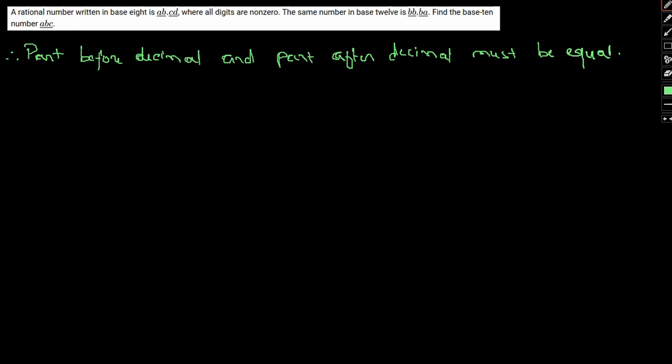So if we take the before decimal part, here ab in base 8, here we have bb in base 12. So this was in base 8, this is 12. So if we further break this down, we have 8a plus b equal to 12b plus b.